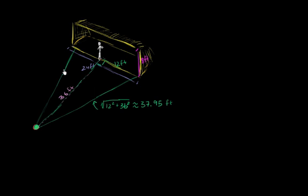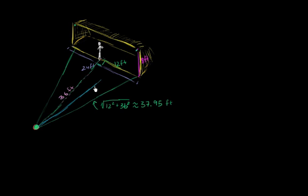That's going to be the same as this distance right over here. Now let's figure out an even further distance — the distance to the top right, which is also going to be the same as the distance to the top left. I encourage people to pause the video and try to think about that on their own. Let's draw another right triangle. If I draw the straight-line distance from the ball to the top right of the goal, I have now constructed another right triangle.